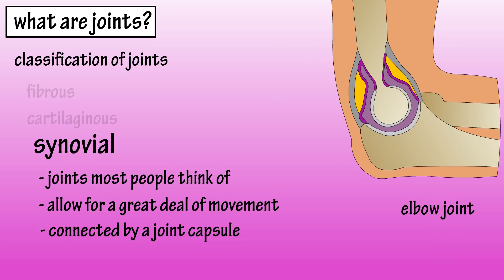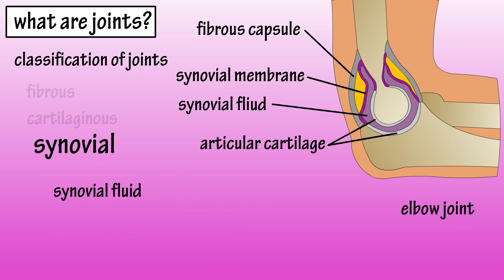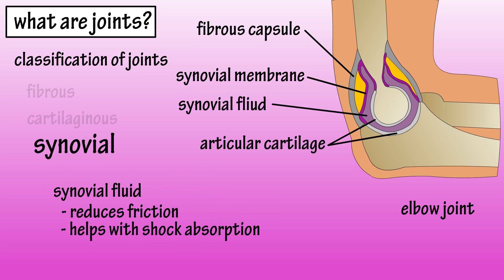The joint capsule has an outer fibrous layer and an inner synovial membrane layer. The synovial membrane layer secretes synovial fluid, which reduces friction between the articular cartilage of bones during physical movement, aids in shock absorption, and aids in nutrient and waste transportation.